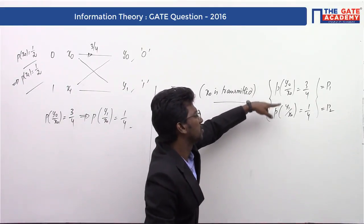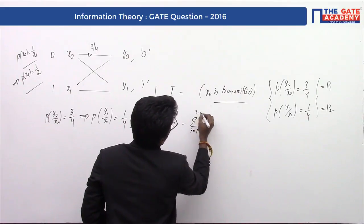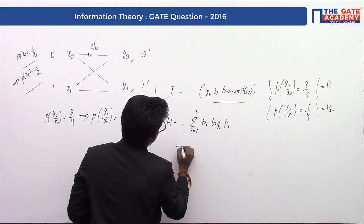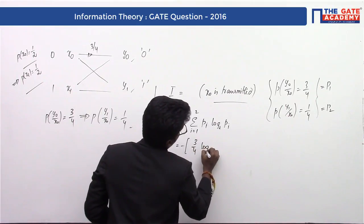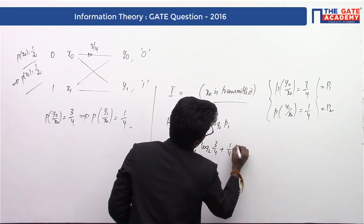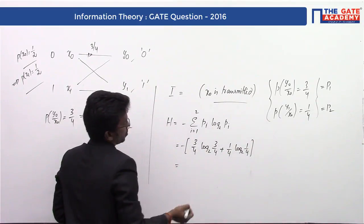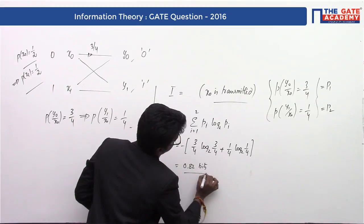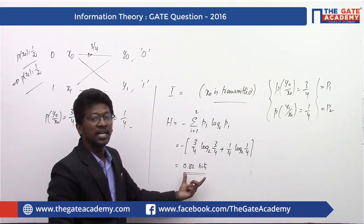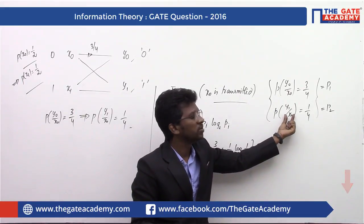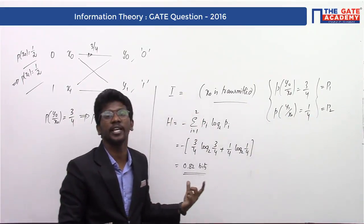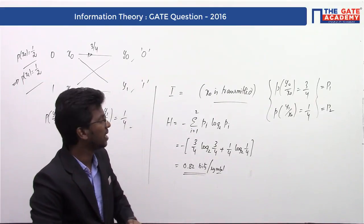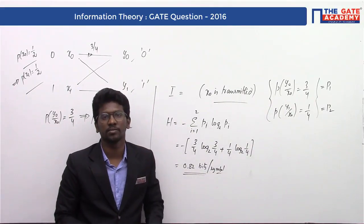Substituting the two probabilities into the entropy formula: H = −[(3/4) log(3/4) + (1/4) log(1/4)]. Using a calculator to solve this gives an answer of 0.82 bits. So the information associated with transmitting x0 — that is, the entropy of the received symbol given x0 is transmitted — is 0.82 bits.